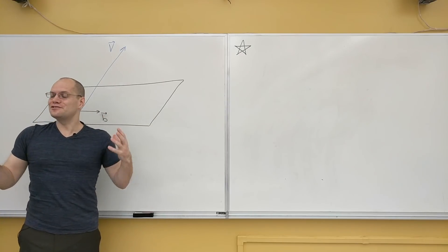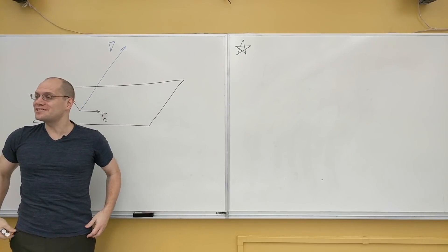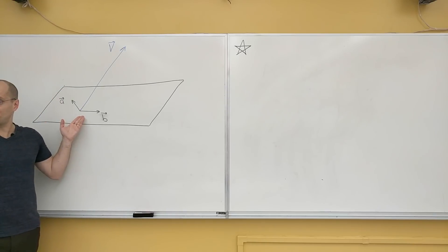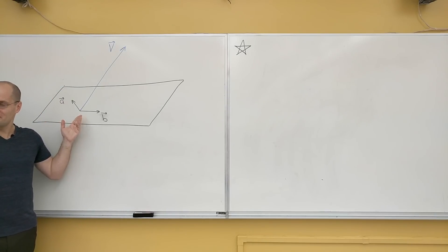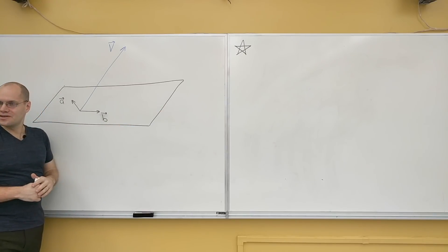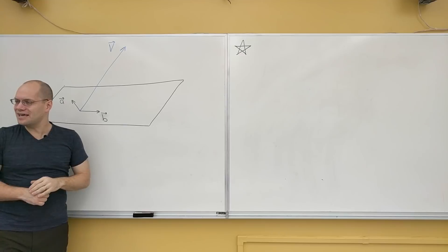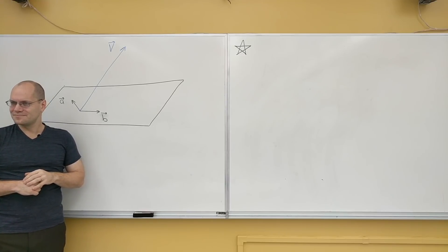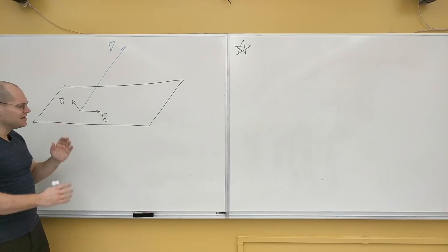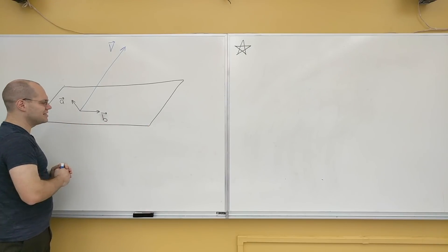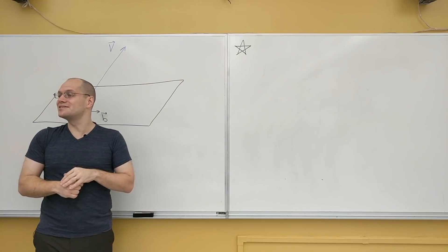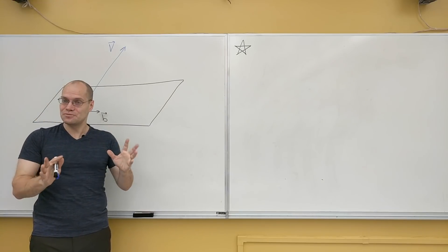If we try to represent v as a linear combination of a and b we would fail, because all linear combinations of a and b lie in this plane and v does not lie in this plane. So it's impossible to decompose v in terms of a and b. This is the picture that represents basically any linear system — that's the geometric picture.